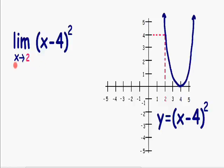Here we have the limit as x approaches 2 of (x - 4)². So what does this mean? This means what is the value of (x - 4)² when x is really close and approaches 2.